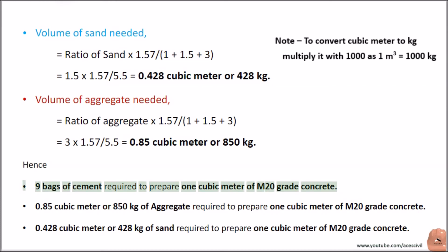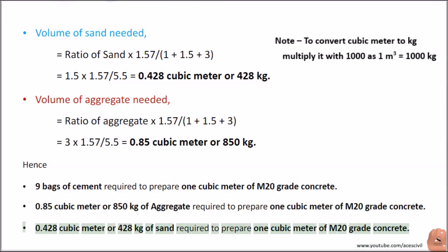Hence, to prepare 1 cubic meter of M20 grade concrete: 9 bags of cement are required; 0.85 cubic meter or 850 kilograms of aggregate is required; and 0.428 cubic meter or 428 kilograms of sand is required.